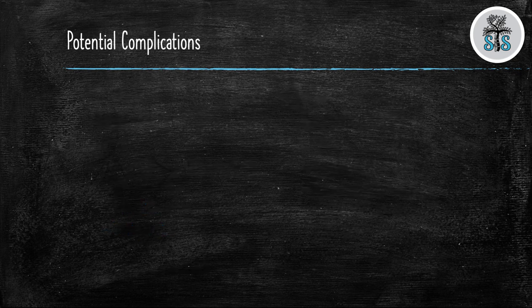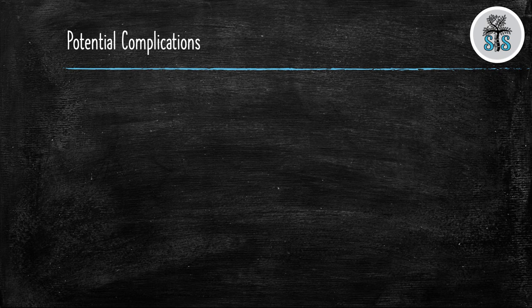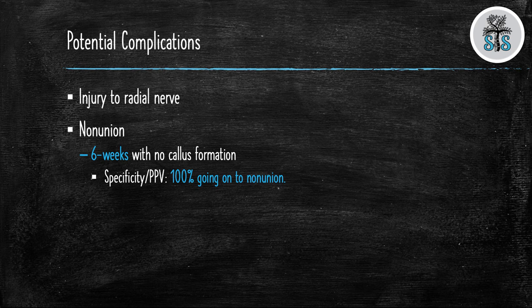We will now turn our attention towards some potential complications when treating humeral shaft fractures. The most common complications are injury to the radial nerve. Non-unions can occur. If there is no callus formed at six weeks there is a 100% specificity and positive predictive value that the fracture will go on to a non-union. Risk factors for developing a non-union include fracture distraction, soft tissue interposition at the fracture site,